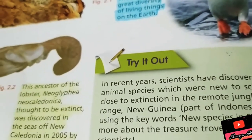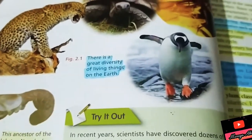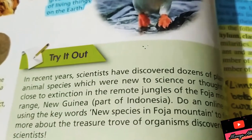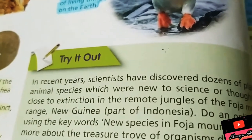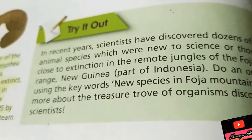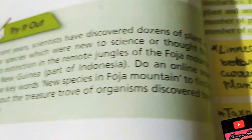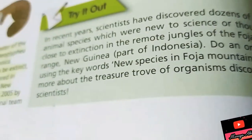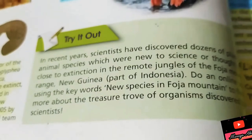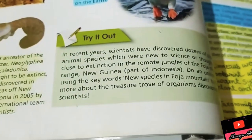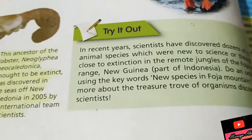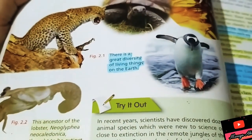There is a 'Try It Out' activity in your book. In recent years, scientists have discovered dozens of plant and animal species new to science, or thought to be close to extinction, in the remote jungles of the Fojo Mountain Range, New Guinea, part of Indonesia. Do an online search using the keyword 'new species in Fojo Mountain' to find out more about the types of organisms discovered there.